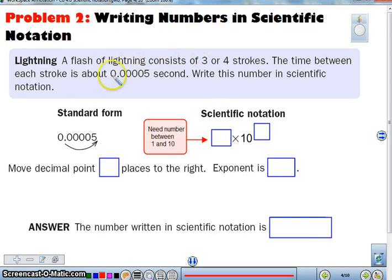How do we write a number in scientific notation? So here's a situation. Lightning, a lightning flash consists of three or four strokes. The time between each stroke is about .0005 seconds. Write this number in scientific notation. So first thing we want to do is on your paper, you always want to write down the number. Then you want to be thinking, okay, I need the first number to always be between 1 and 10. So where do I need to place the decimal point so it's between 1 and 10? And we need to have a 5.